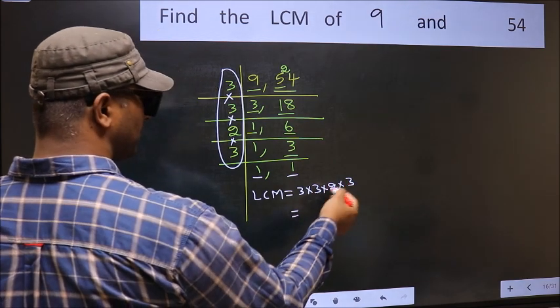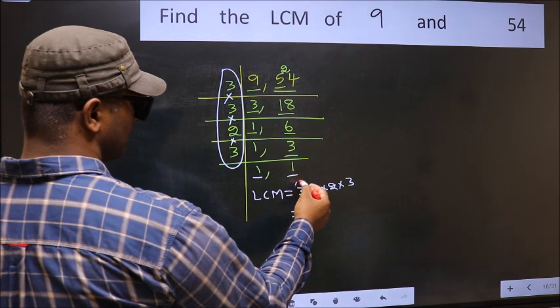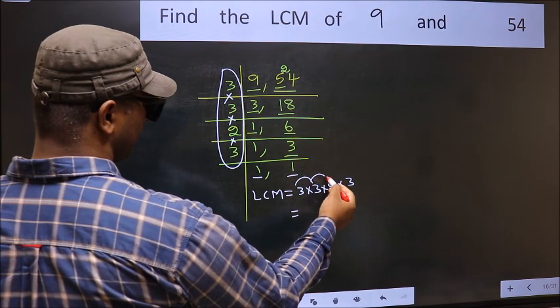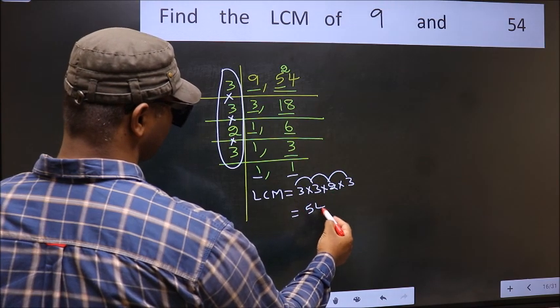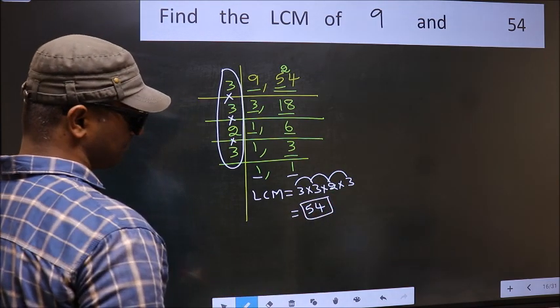Let us multiply these numbers. 3 into 3, 9 into 2, 18 into 3, 54 is our LCM. Thank you.